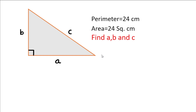Hey friends, welcome back to my YouTube channel. Today in this session we'll solve a problem related to a triangle where the perimeter is given as 24 centimeters and the area of the triangle is also 24 square centimeters. We'll have to find the values of a, b, and c — the lengths of the sides of the triangle.